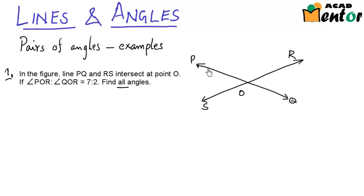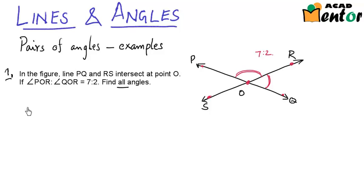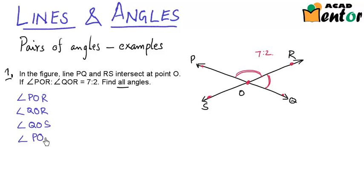Let's look at the question again. PQ is a line, RS is also a line and they intersect at point O right in the center. We are given that angle POR and angle QOR — the ratio of these two angles is 7 to 2. Let me list down all the angles: angle POR, angle QOR — these two ratios are given — and also angle QOS and angle POS. We are supposed to find out what these angles measure.